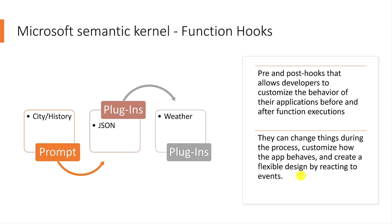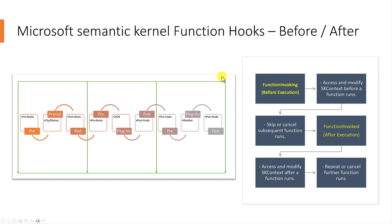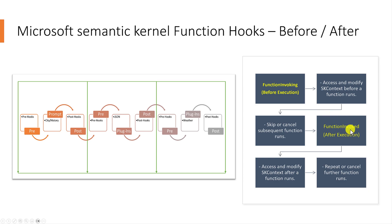Let's understand this a little bit more in detail. To implement this hook, we have to subscribe to these two events: function invoking and function invoked. Both are optional. If you want to handle the pre-hooks, we subscribe to function invoking. If you want to handle post hooks, we subscribe to function invoked.